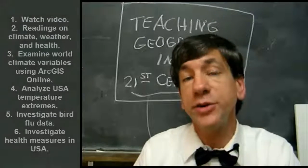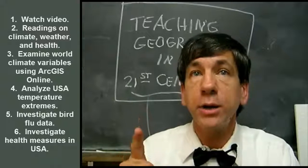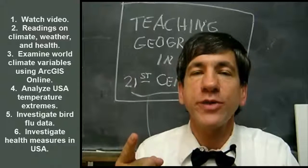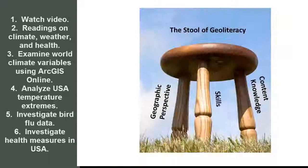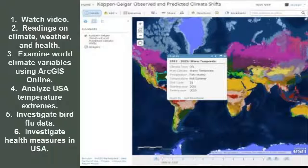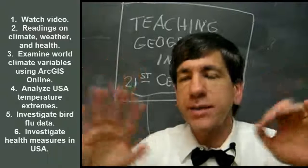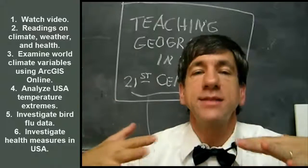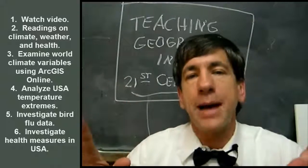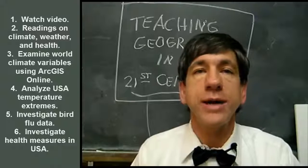What specifically are we going to do as far as our learning activities in week number two? First, we're going to watch a recorded video on this week's topics — that's this video right here, so thanks for joining me. Number two, we're going to have some short readings on climate, weather, and health. Number three, we're going to analyze and examine world climate variables using ArcGIS Online. Fourth, we're going to examine USA temperature extremes in ArcGIS Online, so you really see the pattern — not just temperature, but think outside the box. Think of other data you could actually analyze in similar ways: point data on top of maps, looking at the difference between July and January extreme temperatures across the United States.